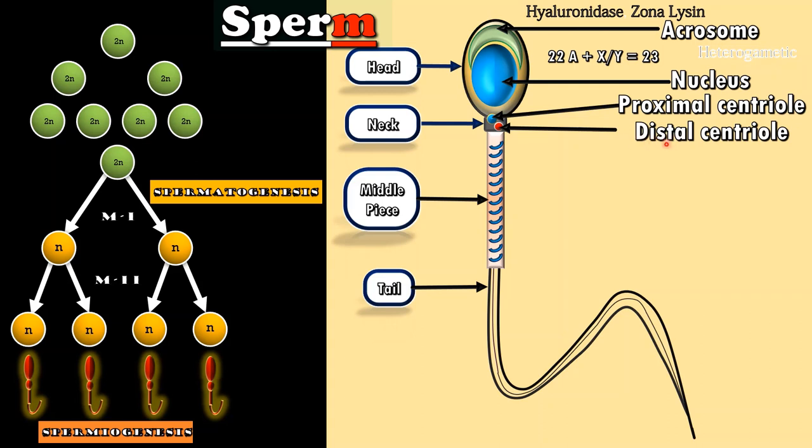Middle piece is 5 to 7 micrometer. It contains axial filament which are surrounded by spirally coiled mitochondria which is also called nebenkan. Mitochondria produces energy for sperm movement.